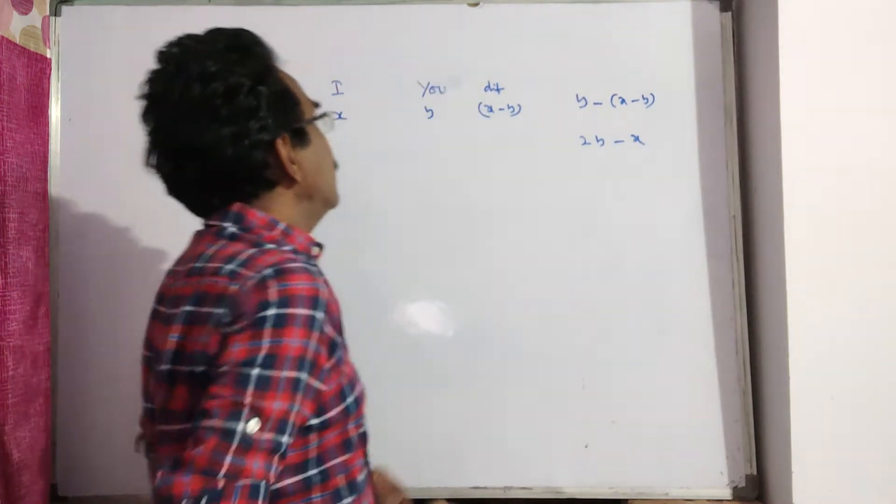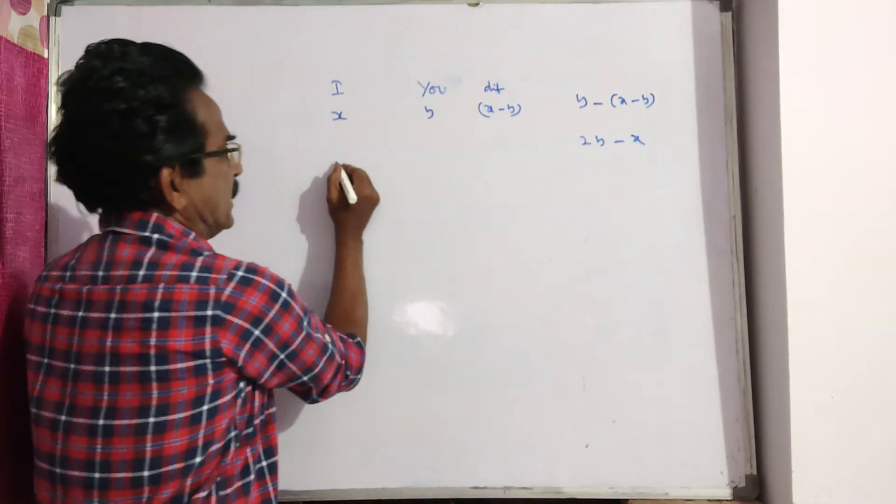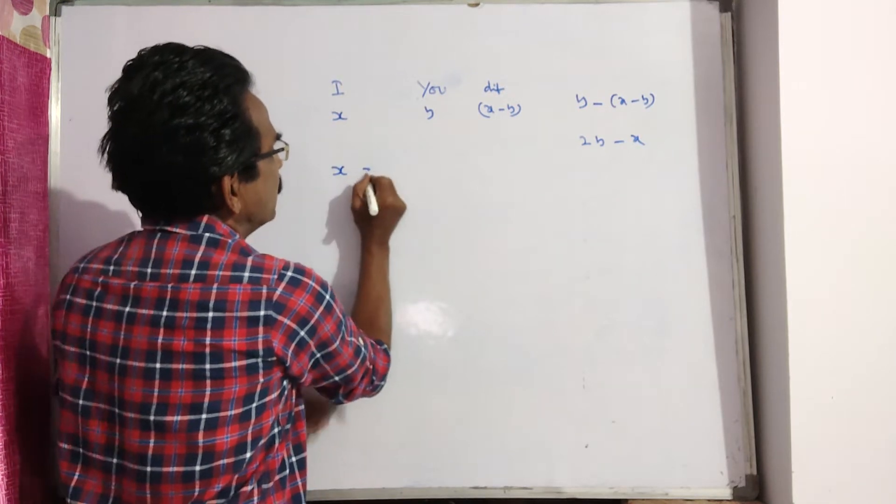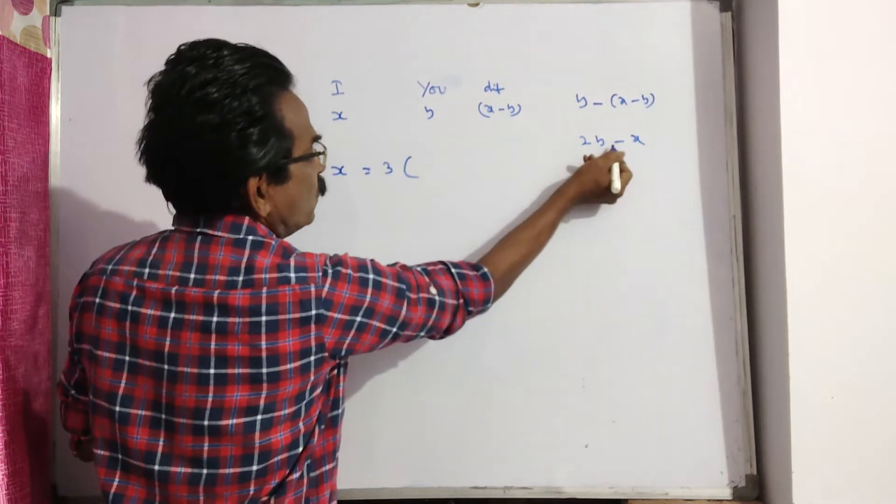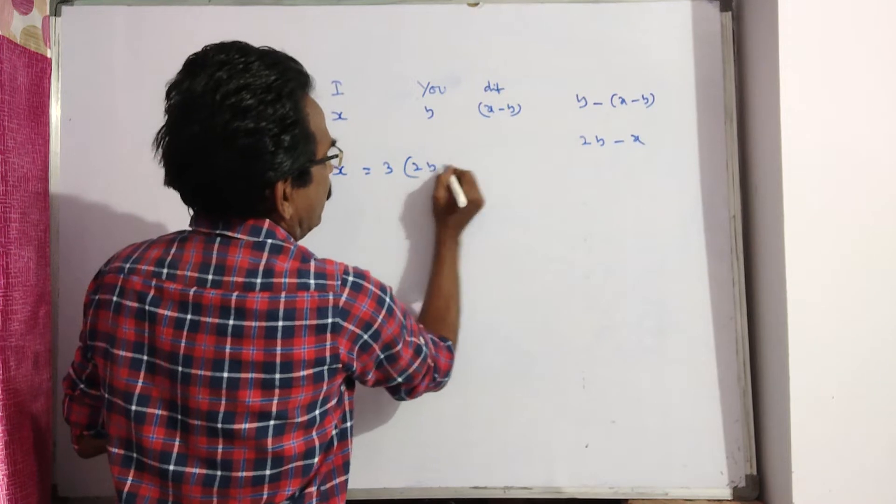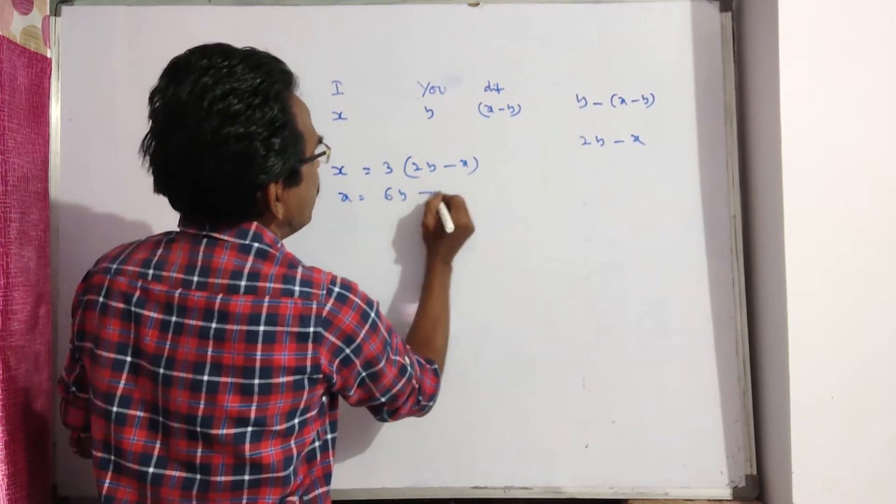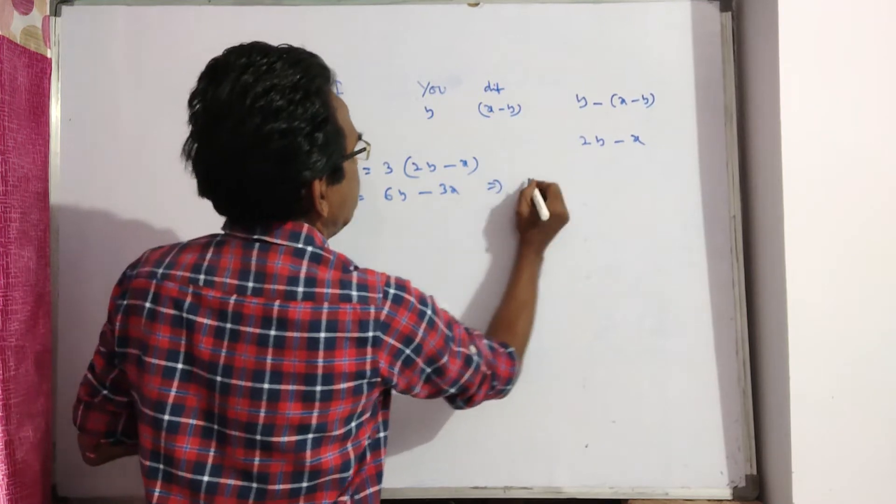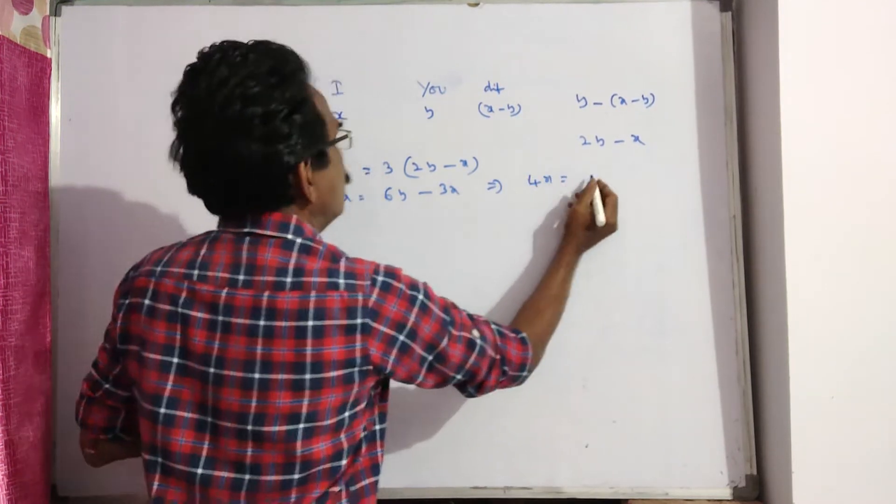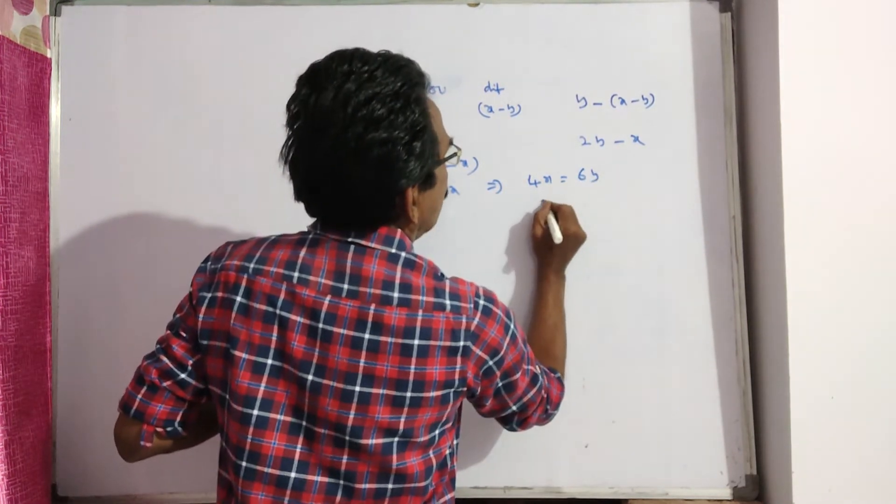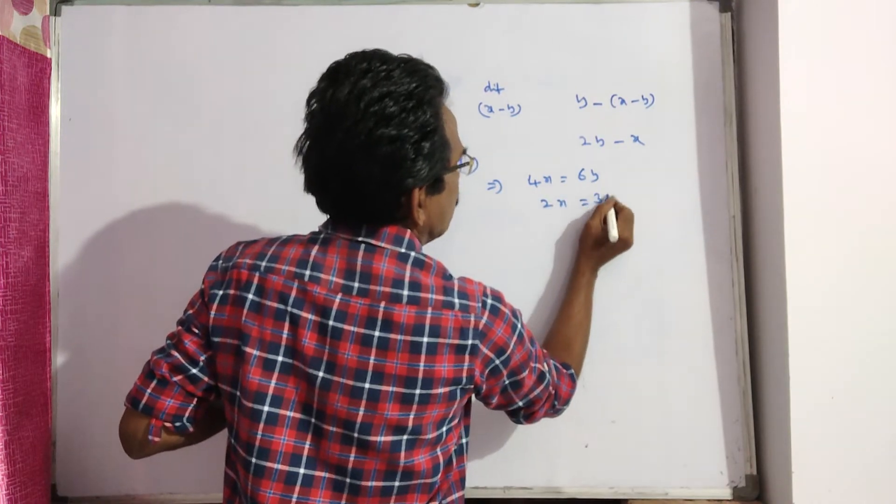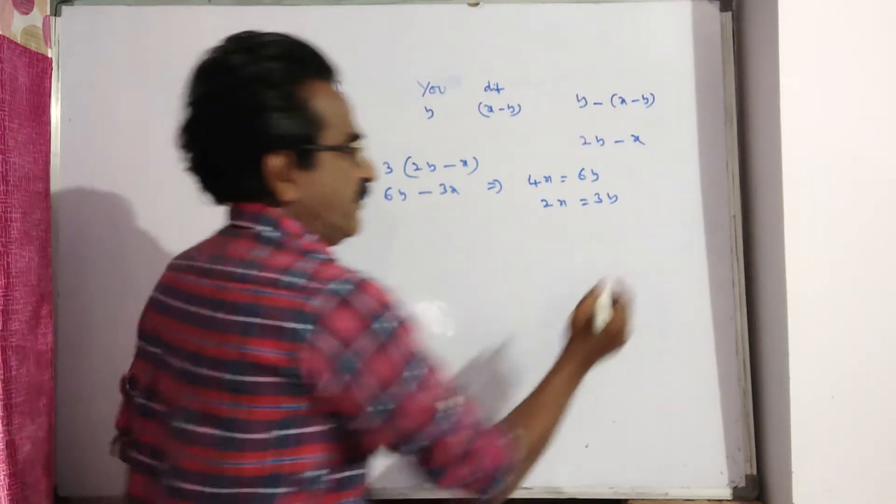Now, the first equation goes like this. What he says, I am three times as old as you were. So, X is equal to 3 times 2Y minus 3X. It implies 4X is equal to 6Y or 2X is equal to 3Y. This is the first equation, friends.